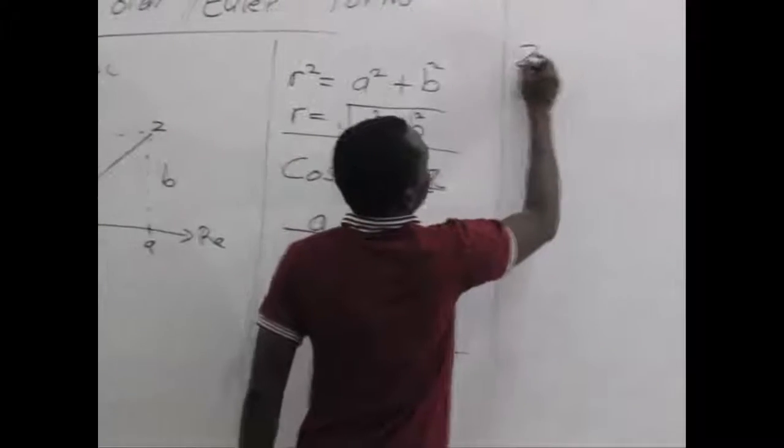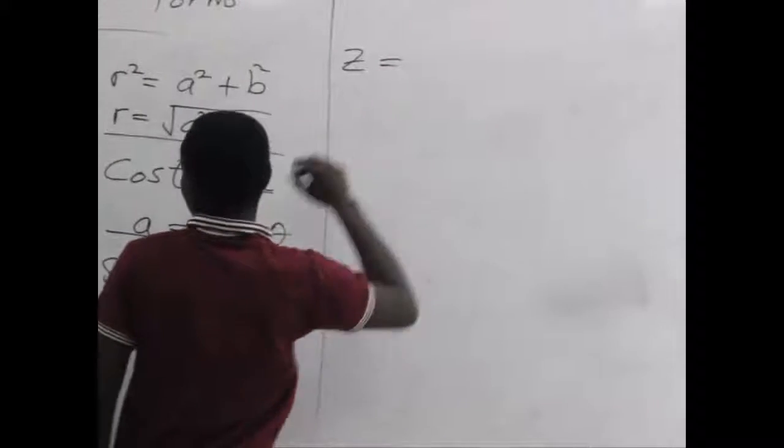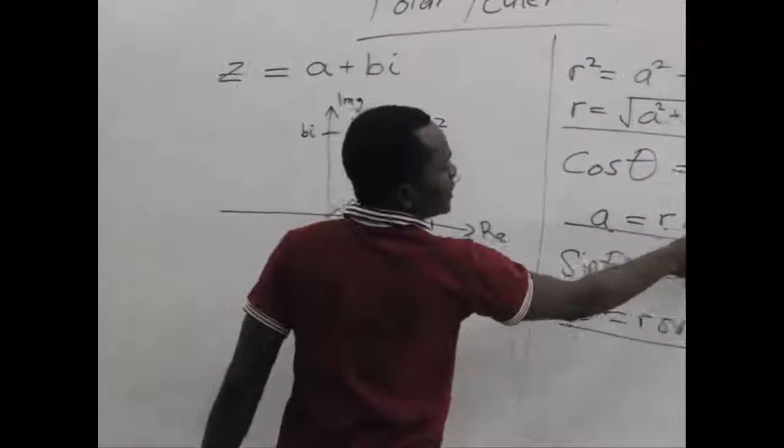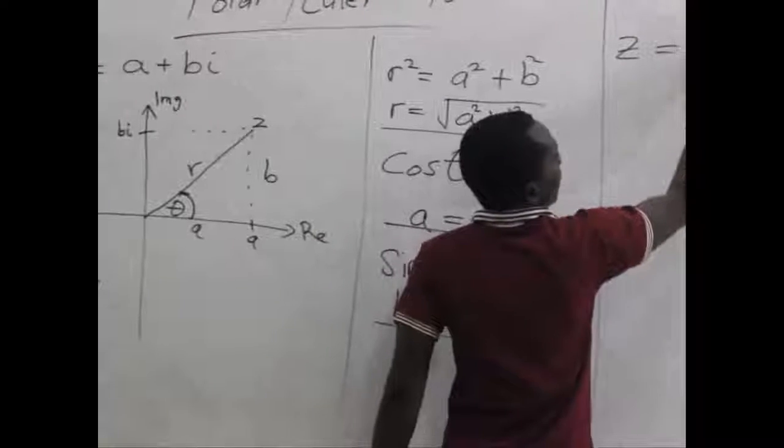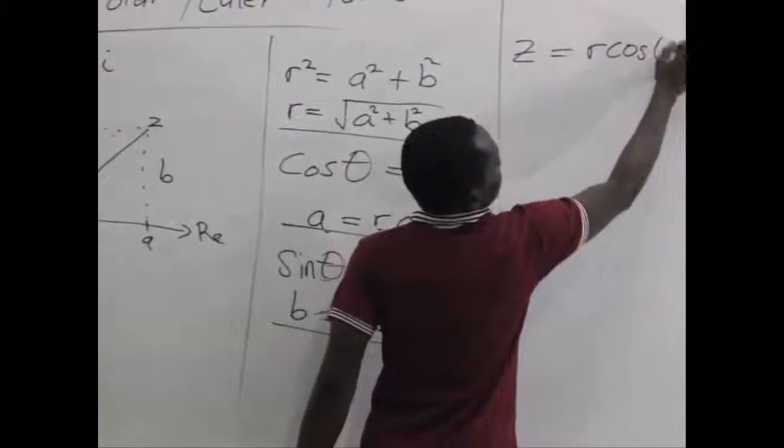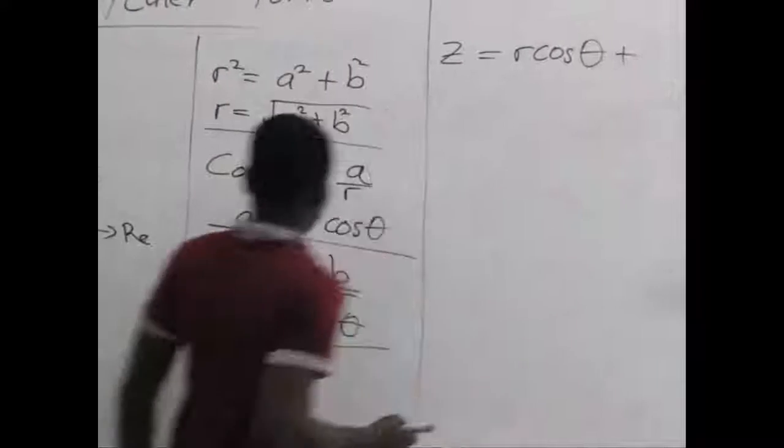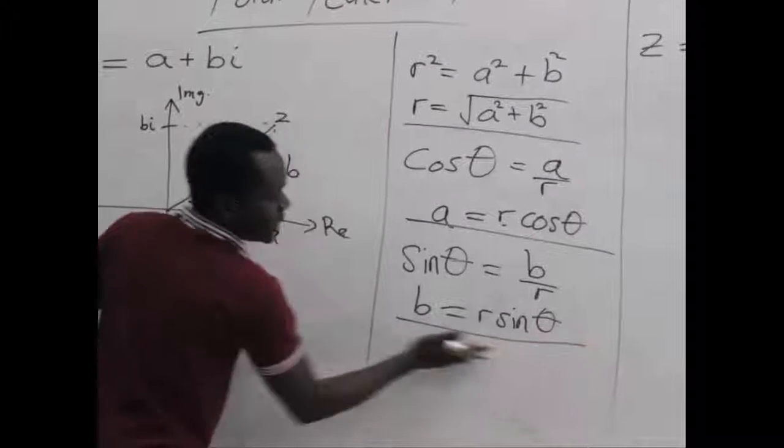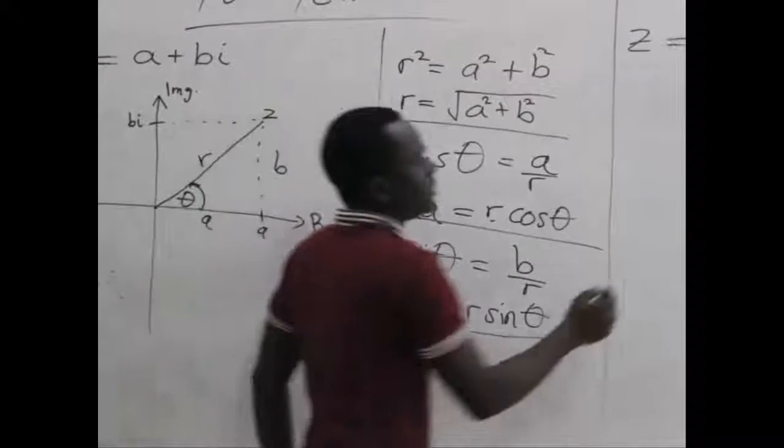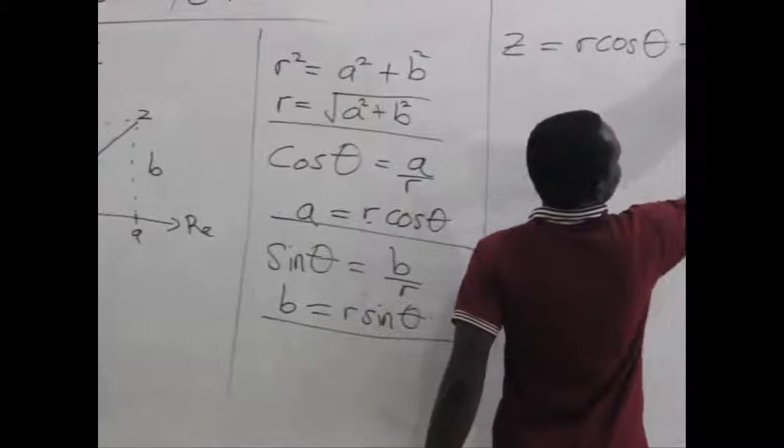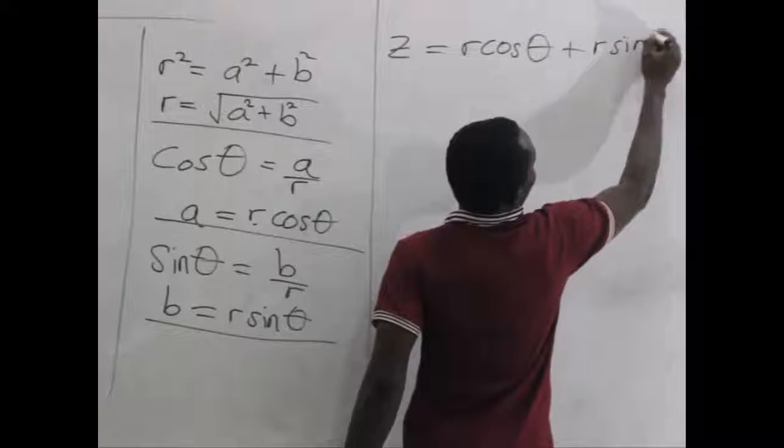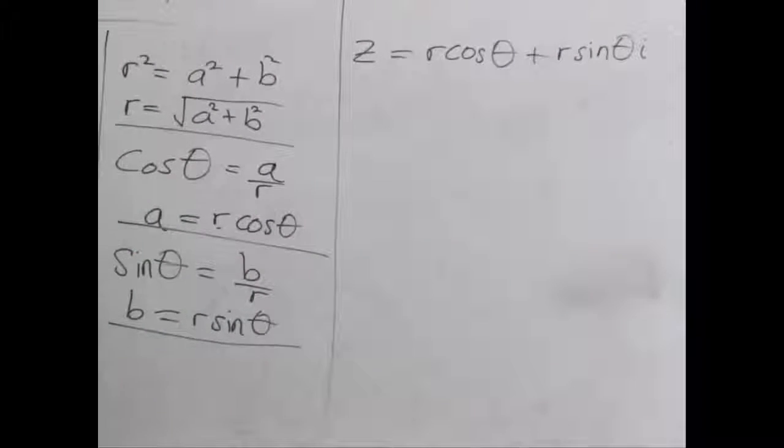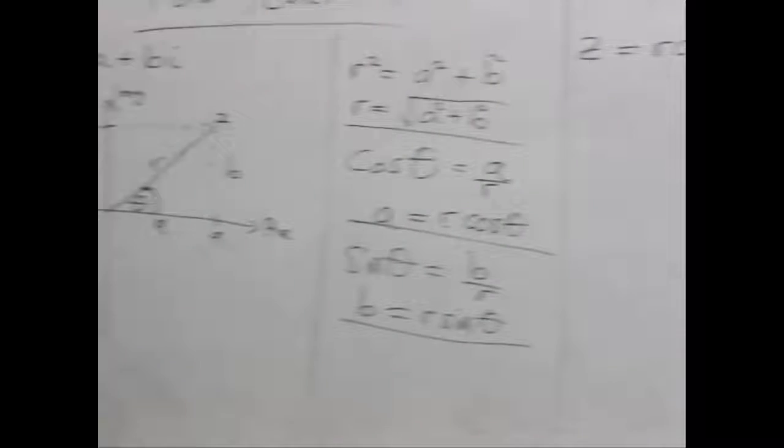So now, Z becomes A, which we are representing with R cos theta. R cos theta plus B, which we are representing with R sine theta. Don't forget, we still maintain an i, which shows that this is a complex number.